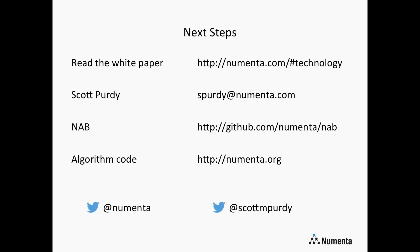The white paper 'The Science of Anomaly Detection' covers many of the things we discussed in more detail, and the easiest way to find it is at numenta.com/technology. The Numenta Anomaly Benchmark is at github.com/numenta/nab. Feel free to reach out by email.